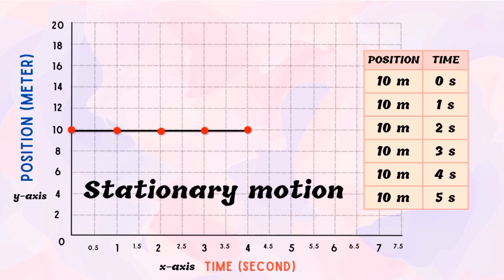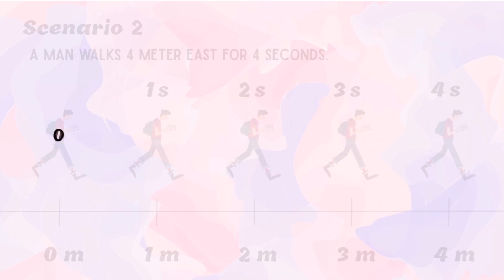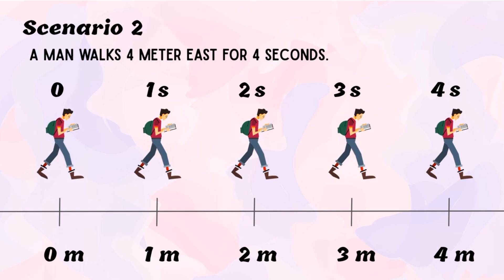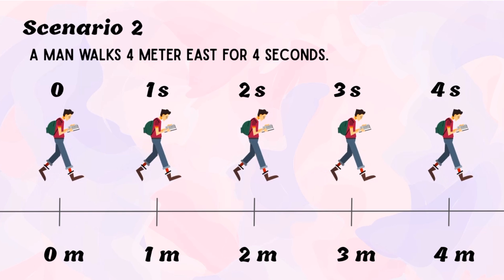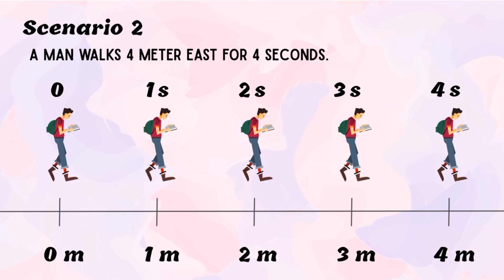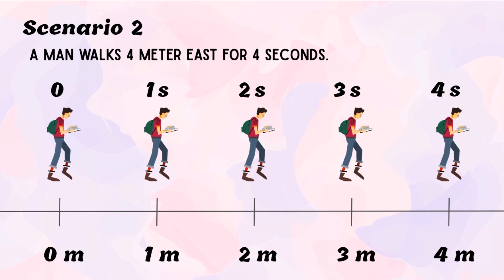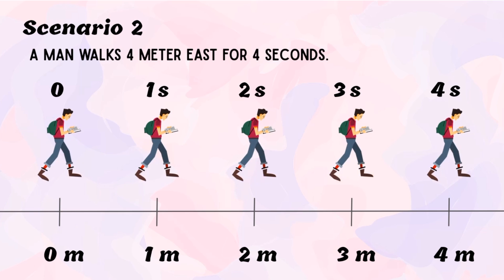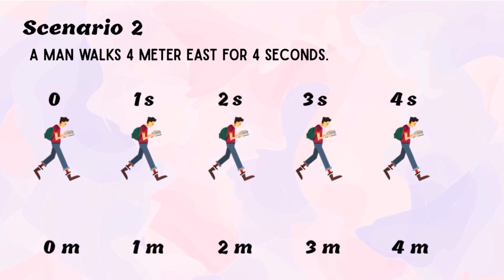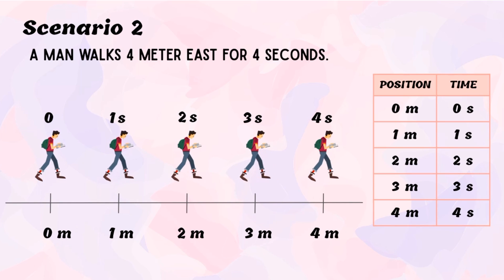Stationary motion happens when an object is not moving, meaning it has a zero velocity. Let us have another example: a man walks 4 meters east for 4 seconds. Based on our previous lesson, the speed of the man is 1 meter per second. But the question is: does the man change speed while walking? Let us put it on a graph. The first thing you need to do is put your data on the table.